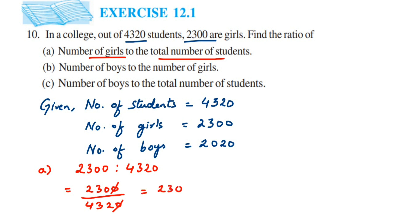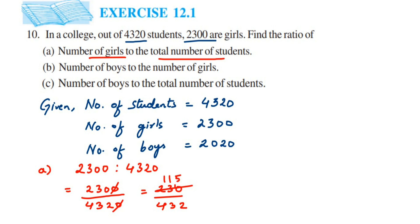Both 230 and 432 are even numbers, so we can cancel by dividing both by 2. Cancellation means dividing both numbers by the same value. Dividing 230 by 2 gives 115, and dividing 432 by 2 gives 216. Now we check if 115 and 216 can be simplified further — trying the 5 times table won't work since 216 is not divisible by 5.